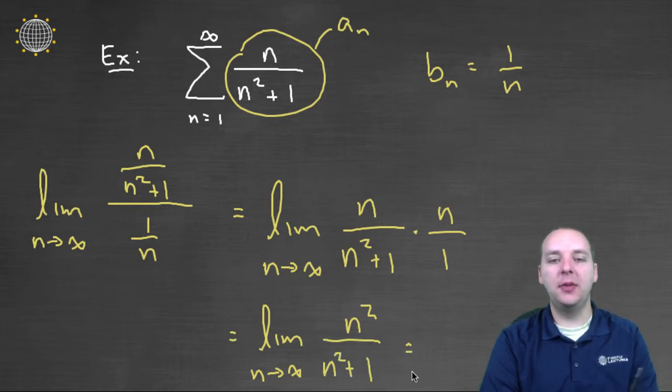I see right off the bat this is going to be a L'Hopital rule problem, because you get infinity over infinity for this limit. So after one use of L'Hopital's rule, you get two n over two n, which would reduce to two over two, or which would be one.